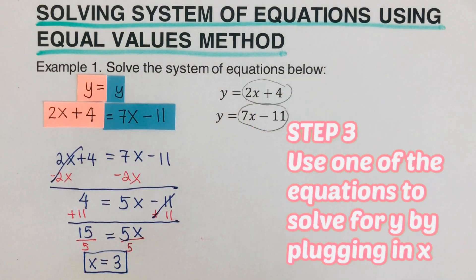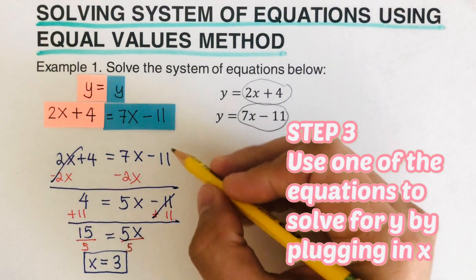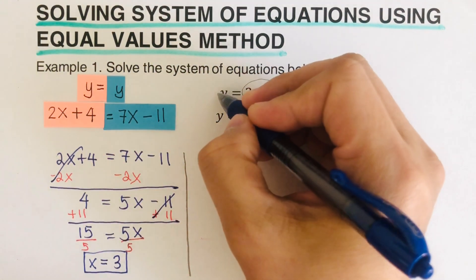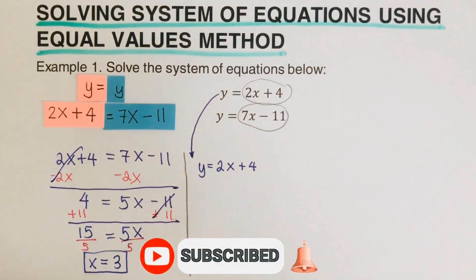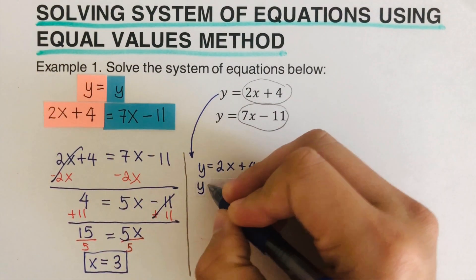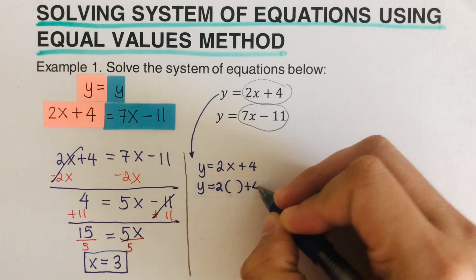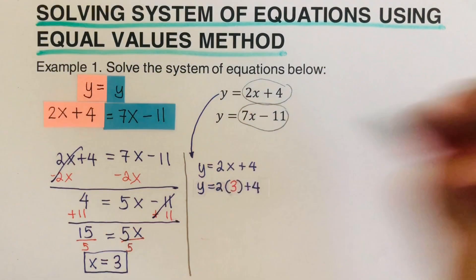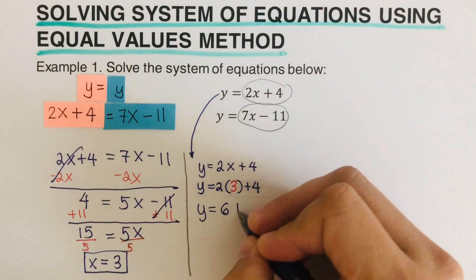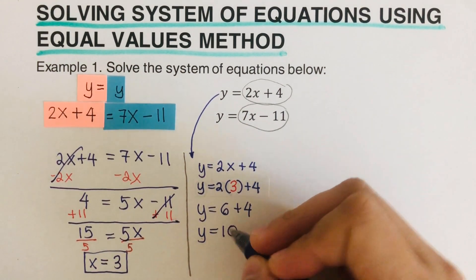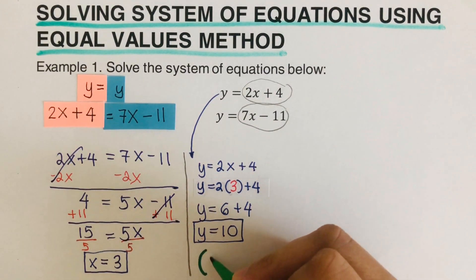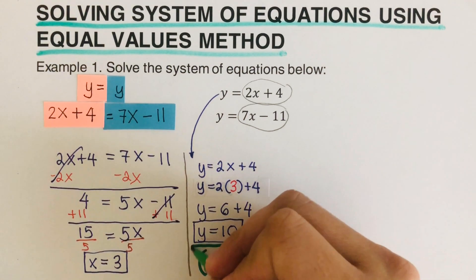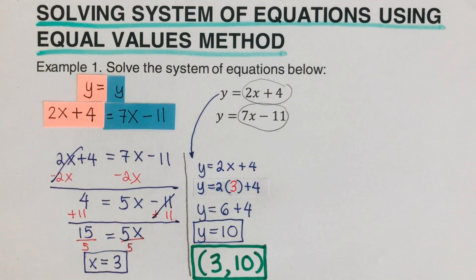That's the value for x. The third step is to take this value of x and plug it into one of the equations to solve for y. I'm going to use the first equation: y equals 2x plus 4. Plugging in x equals 3, we get y equals 2 times 3 plus 4, which is 6 plus 4, so y equals 10. The point of intersection between these two lines is (3, 10), which is our solution.